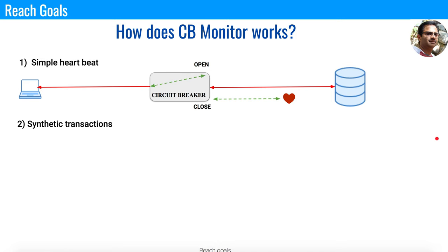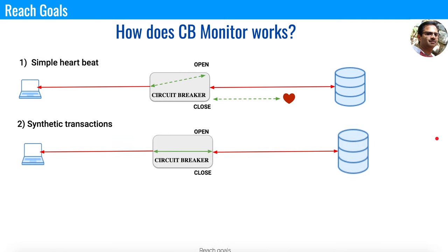The second type is called synthetic transactions, or fake transactions. The client connects to the services through the circuit breaker. When connections are good, the circuit breaker is closed. The circuit breaker's monitor sends a fake transaction to the services to understand whether transactions are completing on time. If the response time is within the acceptable limit, say 15 milliseconds, everything is good. But if the response time grows to 100 or 200 milliseconds — higher than expected — the circuit breaker opens immediately.